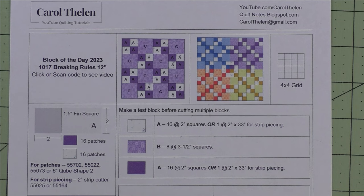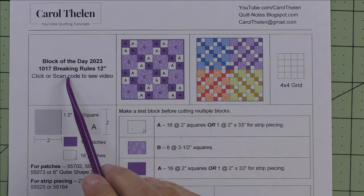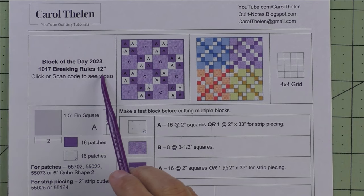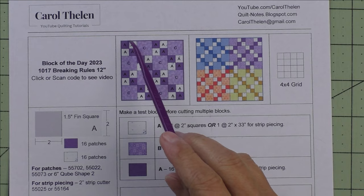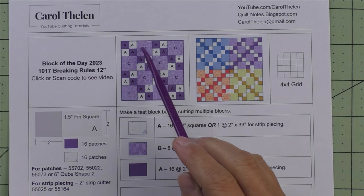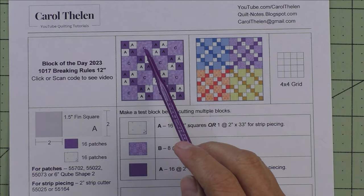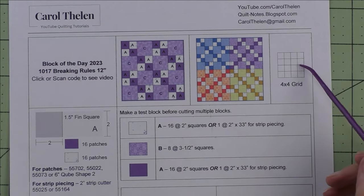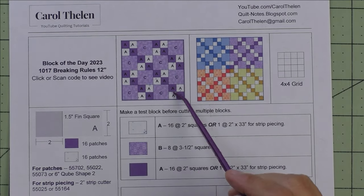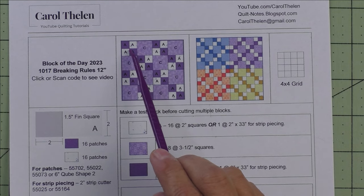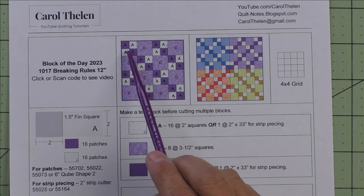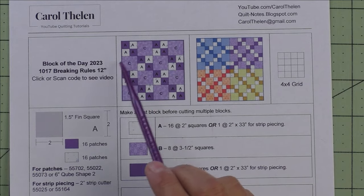This block is called Breaking Rules and finishes at 12 inches. The diagram is here. We have four patch units and just plain square units. This is a four by four grid, so we are four across and four down, and the unit in each grid finishes at three inches because three times four is 12.